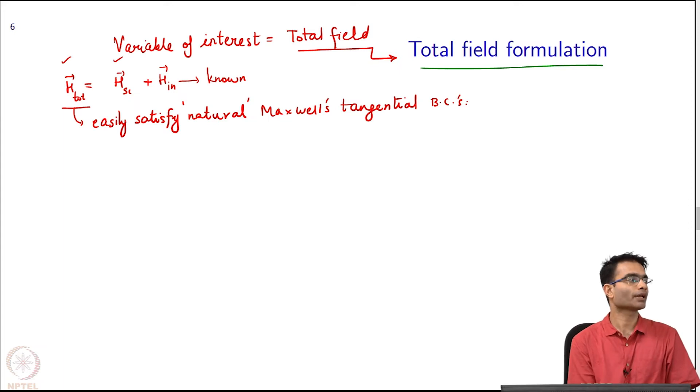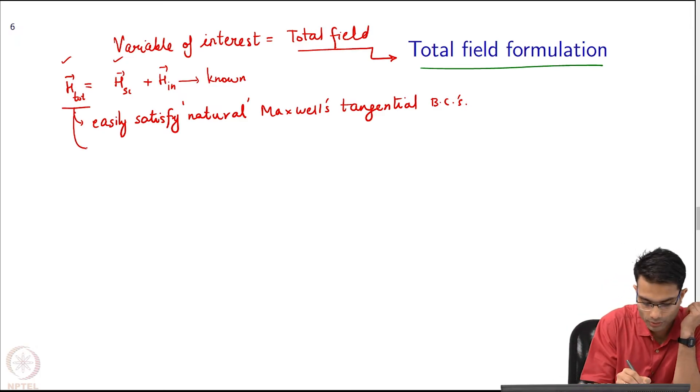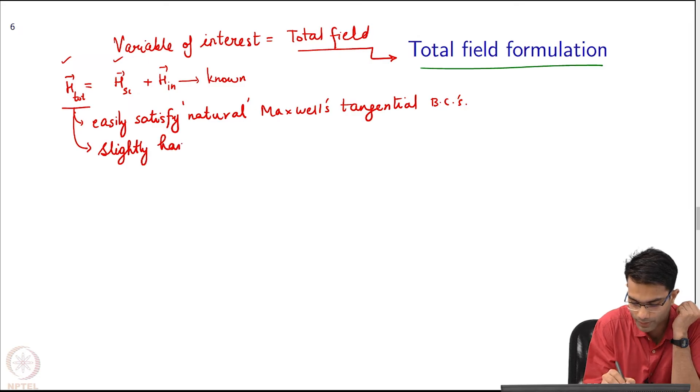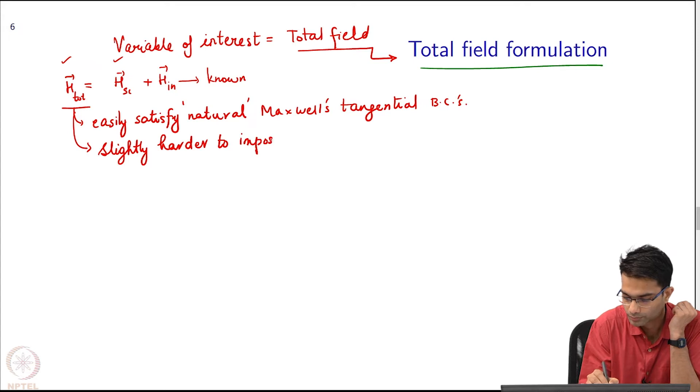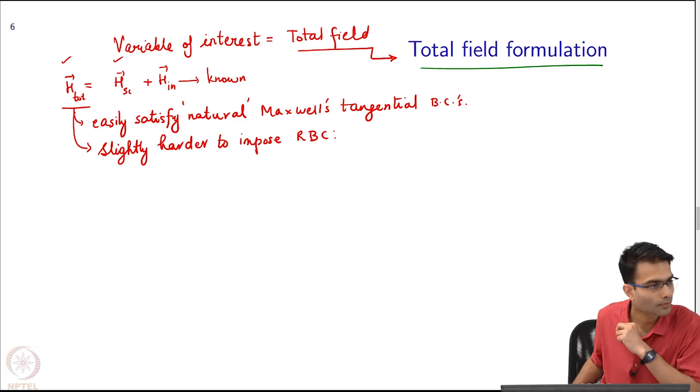But on the disadvantage when I come to the radiation boundary condition, the disadvantage is that this boundary condition which I just derived, radiation boundary condition, it was obeyed by whom? Scattered field not the total field. So if my variable is total field like we are done in the case of 1D I have to subtract off the incident field and then impose the boundary condition. So slightly harder, not very hard, but we just have to take care of it.